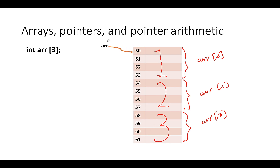In C++, the name of the array acts like a pointer to the first element. Since it acts like a pointer to the first element, I can access the first element through the pointer by dereferencing it. So if I say star array, that gives me the first element, which I can also access using the array notation as array[0].